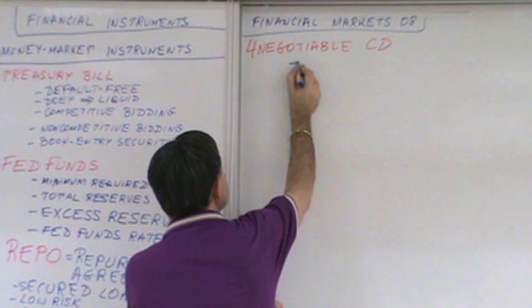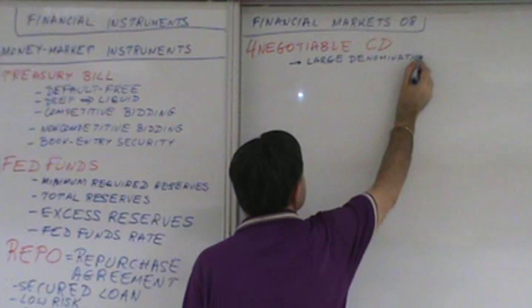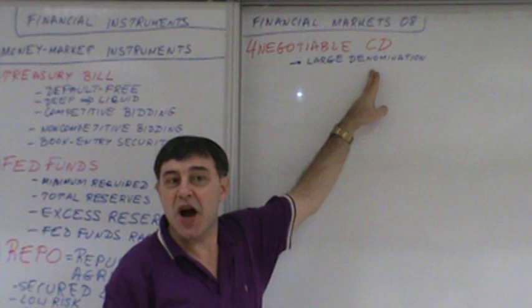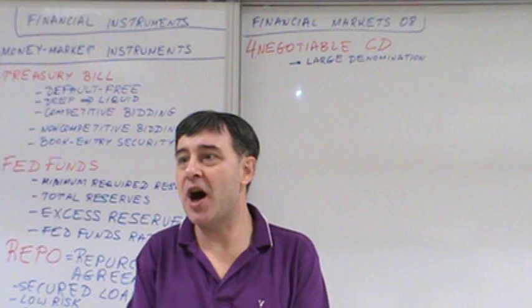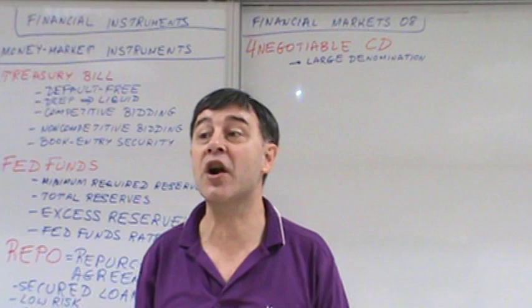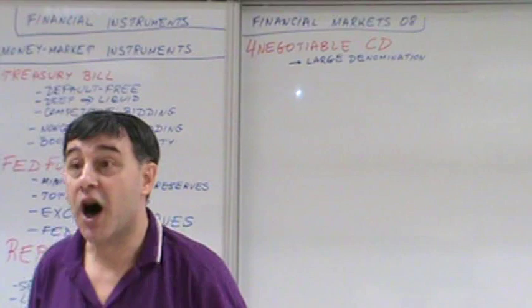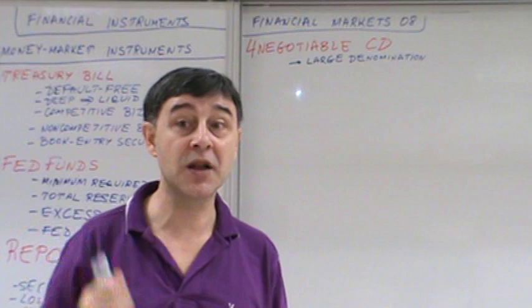The first characteristic is that it is large denomination. Denomination means the size of the face value. Small denomination will be $100 — you can go invest and buy yourself a $100 CD. Small denomination will be $1,000, very common for retail investors.